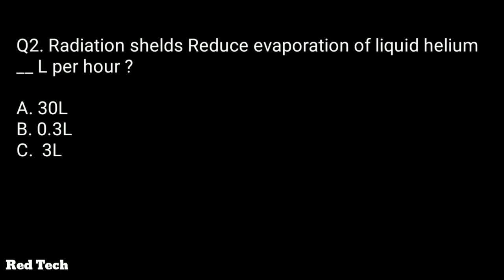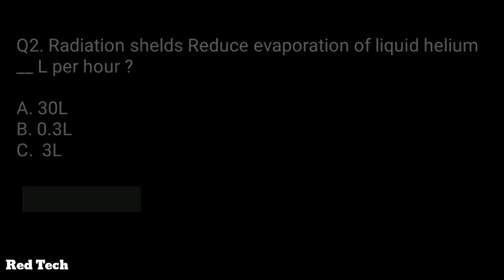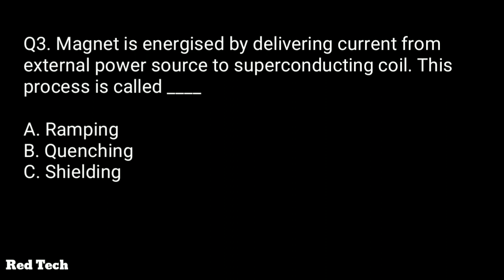Question number two: radiation shields reduce evaporation of liquid — how many liters per hour? The options are 30 liters, 0.3 liters, and 3 liters. The right answer is 0.3 liter per hour, which basically reduces the evaporation of helium gas.